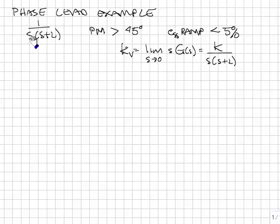If you look at the system, this is a type 1 system, so it will have no steady state error to a step input if we put it in a unity feedback.